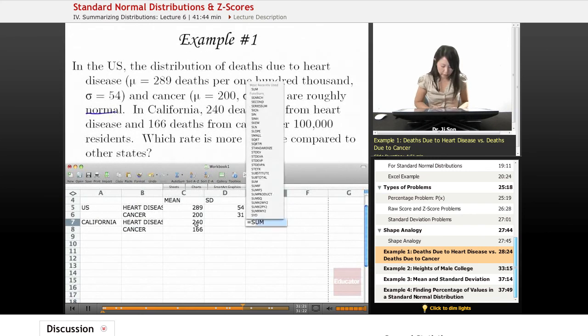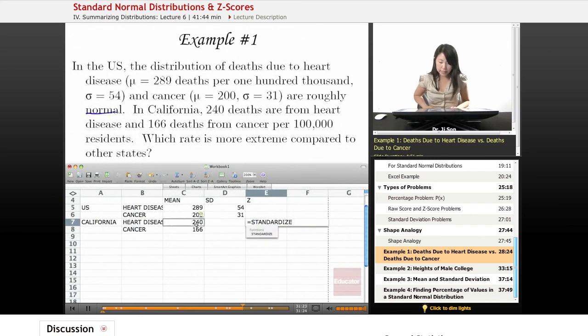So what is the Z-score? I might just put standardized and put in my X, put in the mean that I want to, the population mean, the theoretical mean I want to compare it to, and my standard deviation. Obviously, I could also do my X, subtract the mean, put that in parentheses, divide by standard deviation.